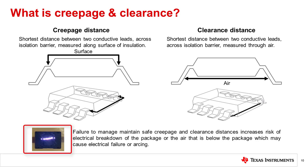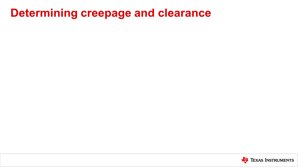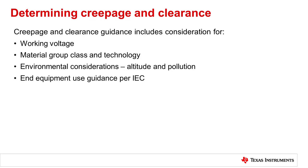Arcing is a phenomenon caused by charge buildup and is especially a concern with higher operating voltages applied continuously over time. The creepage and clearance guidance includes considerations for working voltage, device material classifications, and several environmental conditions such as altitude and pollution ratings. We will take a quick look at the relationship between these factors and give some brief guidance on how to determine the correct creepage and clearance needed for your isolator.